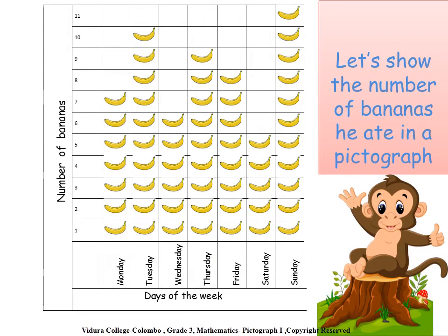Let's show the number of bananas he ate in a pictograph. First, you have to draw a graph as shown here. Then, you have to number the graph. Then, you have to name the two axes as shown here — number of bananas, and days of the week. Then, you can start drawing the bananas from the number one squares.